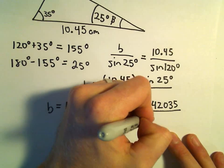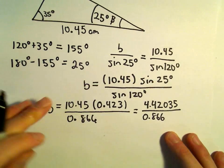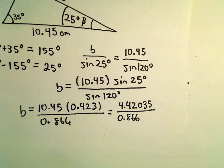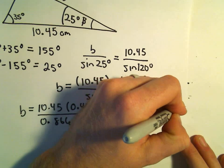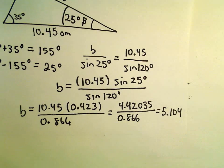We're going to divide that by 0.866, so when I divide this, I'm getting this to be 5.104 after rounding.